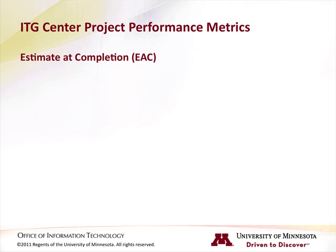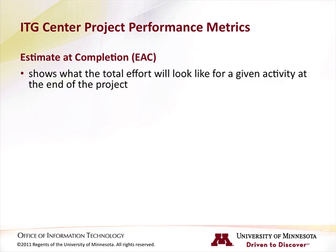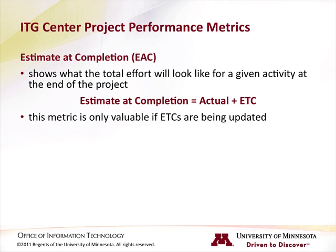Estimate at completion, EAC. The estimate at completion shows what the total effort will look like for a given activity at the end of the project. It's the estimated time spent in days at completion. The calculation is: estimate at completion equals actuals plus estimated time to complete. It is important to note that this metric will only be valuable if ETCs are being updated throughout the project to accurately represent the remaining effort for tasks in the work plan.